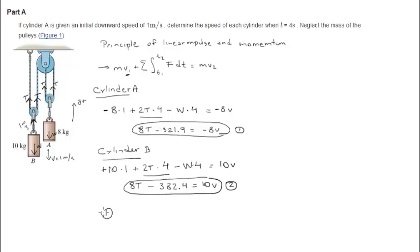If you do equation 1 minus equation 2, you're going to get that. The 8T's are going to cancel out, as you can see, because very conveniently they're both 8T's, so you don't have to do anything to them. And you're going to get that 60.5 is equal to 18v, which basic algebra tells us that v is equal to 3.36.